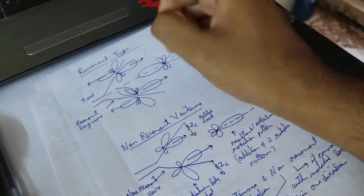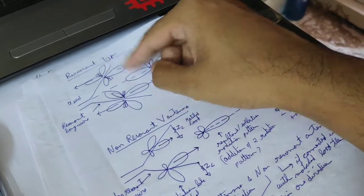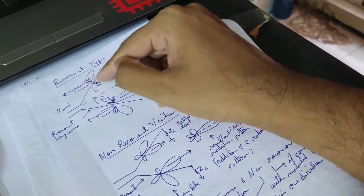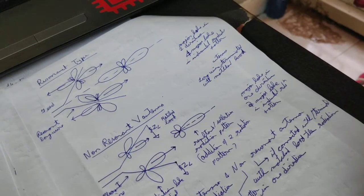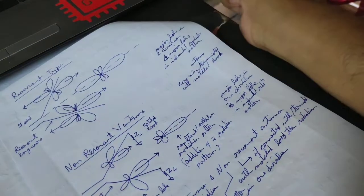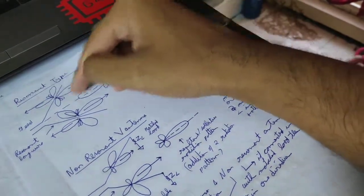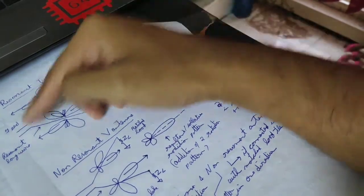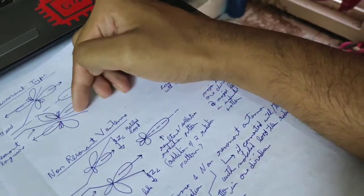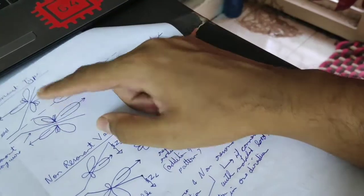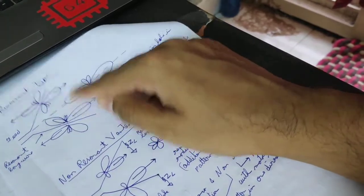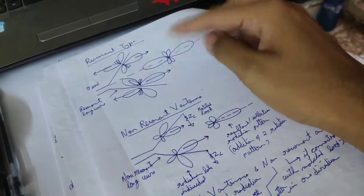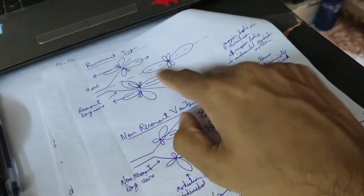In the resonant V antenna, it has two major lobes in opposite directions. Looking at the diagram: each individual long wire has four major lobes — two major lobes and two side lobes per wire. When both wires are combined together, those lobes merge and we get major lobes in two directions. That's a problem because we mostly want a signal in one direction, but in the resonant type, major lobes appear in two opposite directions.